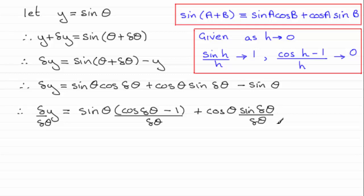Now as we let delta theta tend to 0, then what happens is that delta y over delta theta tends to a limit which we call dy by d theta.